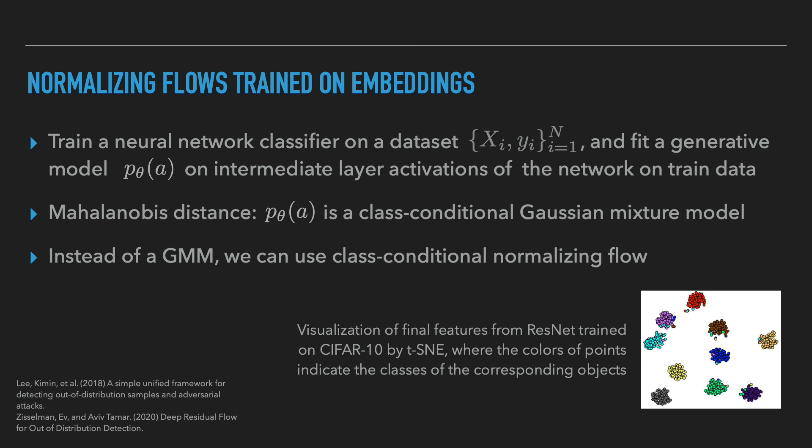So far we have talked about approaches working in a completely unsupervised regime with no label information. The following works use similar ideas based on image embeddings to detect OOD data in a supervised setting. Assuming we have a neural network classifier trained on a classification task, during test time we want to detect whether an input is OOD. We can fit a generative model to the hidden layer activations of the deep neural network on training data, and then use the model to detect OOD inputs with likelihood. This approach was initially considered with a simple class-conditional Gaussian model called the Mahalanobis distance approach, but was also extended to class-conditional normalizing flows, which achieved stronger empirical results as a more flexible model.